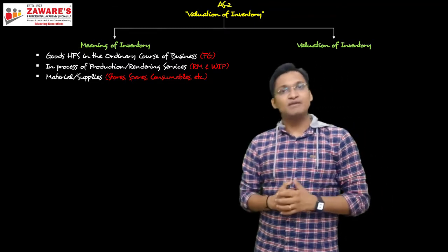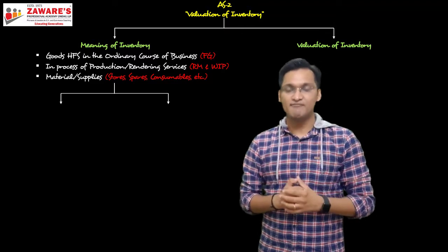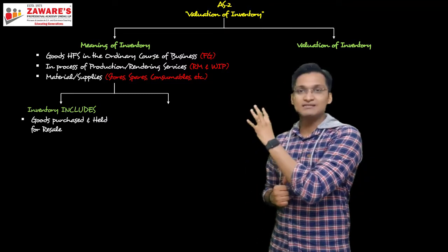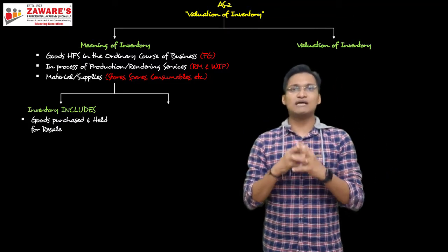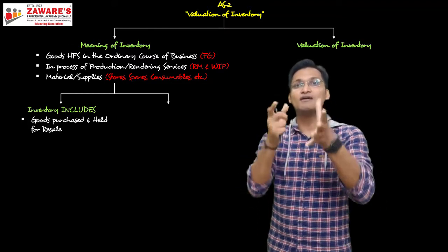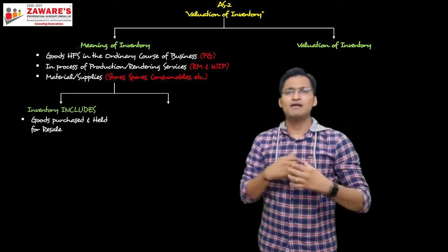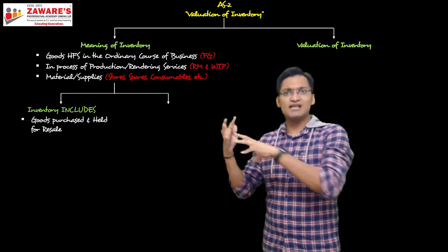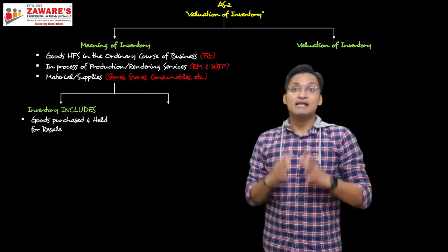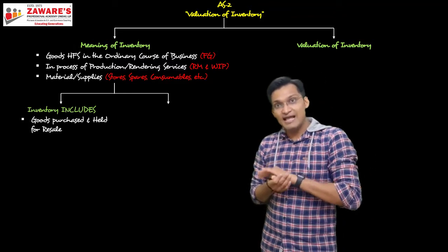Apart from these three things, inventory has some express inclusions and express exclusions defined by AS2. Express inclusion number one: goods purchased and held for resale. The difference from 'goods held for sale in the ordinary course of business' is important. In the first point, stationery is my normal business. But here — suppose I have surplus funds, and a relative in the food grains business tells me pulses are cheap right now but will soon rise in price. I buy 100 bags of pulses, store them, and sell after 6 months when the market price rises.